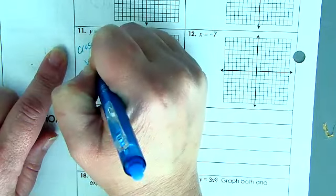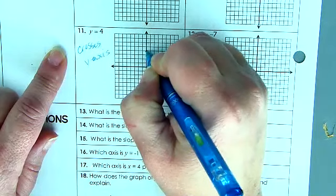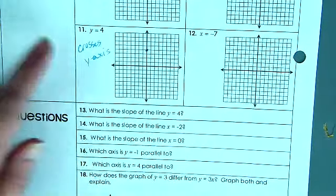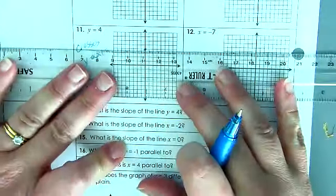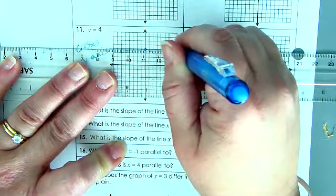At 4: 1, 2, 3, 4. So it's going to be a horizontal line because it's crossing the y-axis and all of the y-values have to be 4.